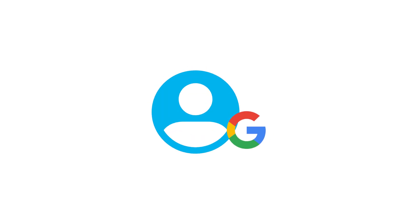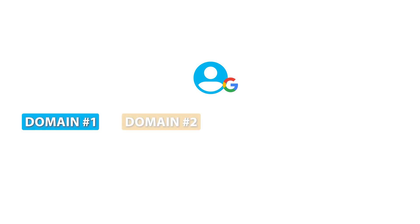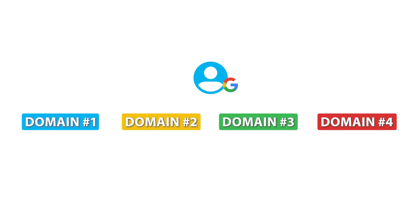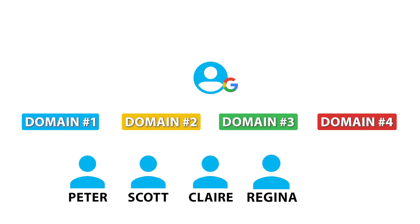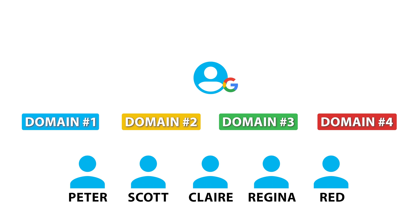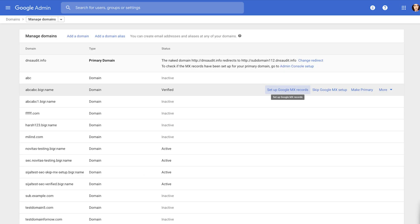So when we have a Google Workspace account, within that Workspace account we're going to have a number of domains and then we're going to have a number of users. These are buckets of email — Peter, Scott, Claire, Regina, and Red. So what some people will do is they will create multiple domains for different businesses under one workspace account.